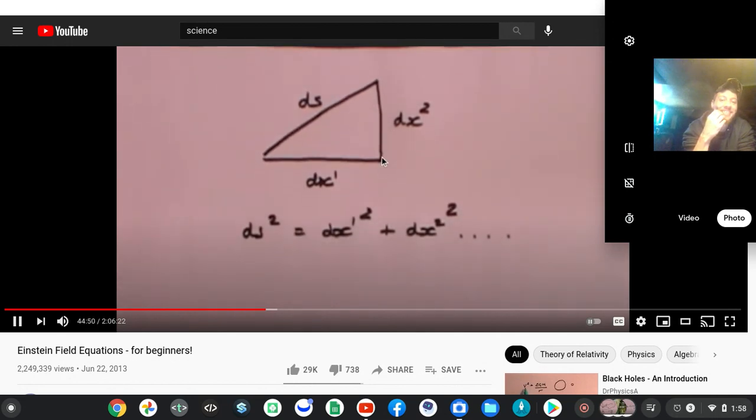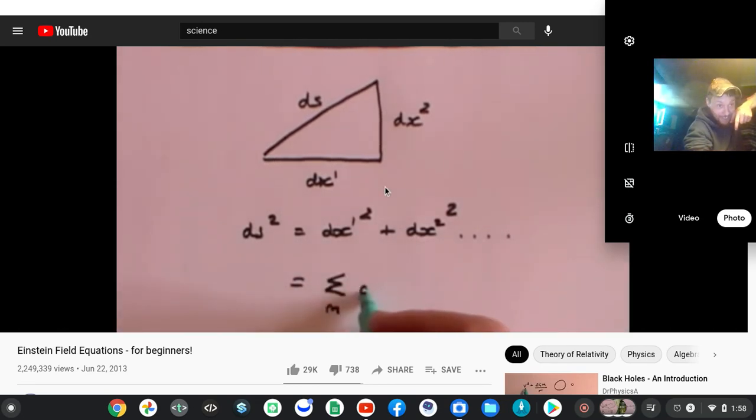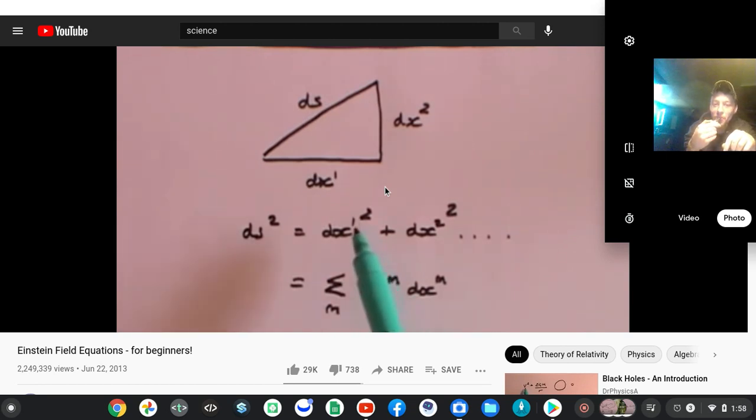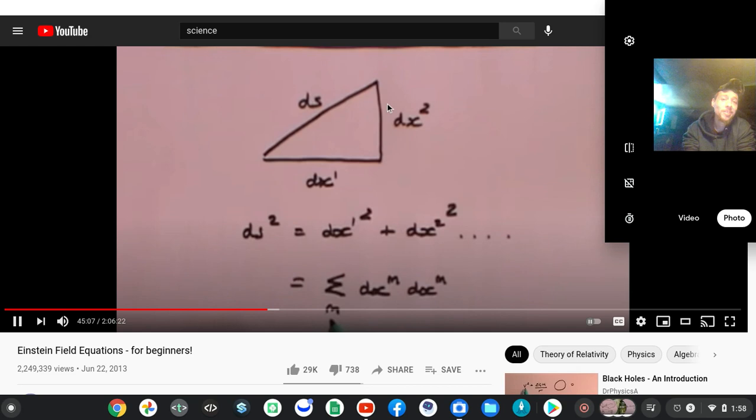And you'll agree that that is simply the summation over m of dxm times dxm. In other words, when m is 1 you get dx1 squared, that's that term. When m is 2, dx2 squared, that's the second term.